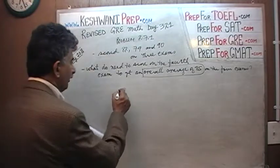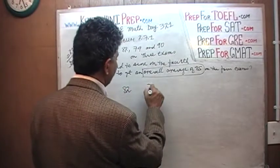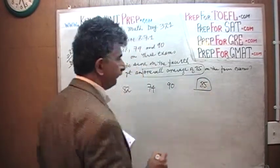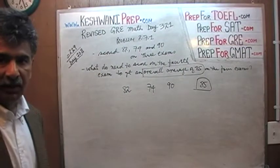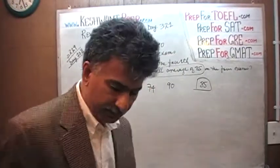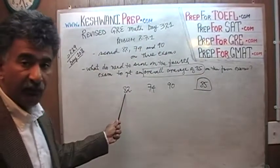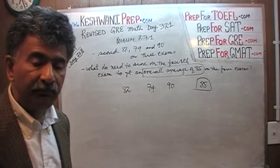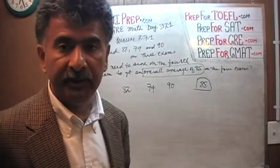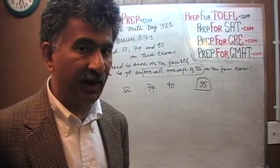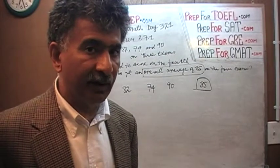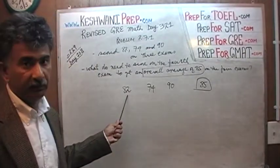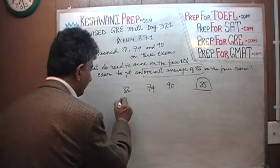Here is what is going on. We have a score of 82 on the first exam, 74 on the second exam, and 90 on the third exam, and we want an overall average of 85 — that is our target. In other words, if we had scored 85 on each of the first three exams, we would have needed exactly 85 on the fourth exam. So 85 was our target on each exam. How short are we on the first exam? We are 3 points short.